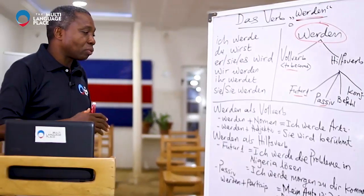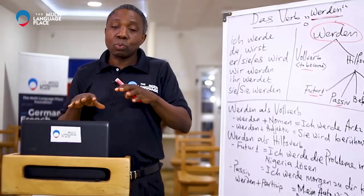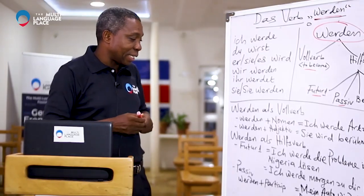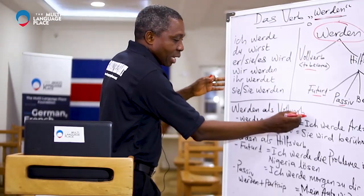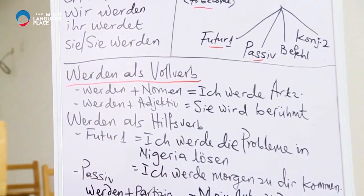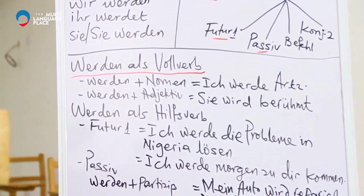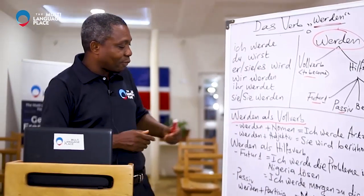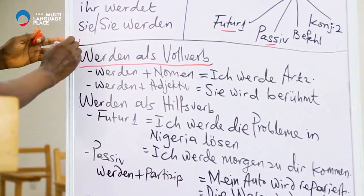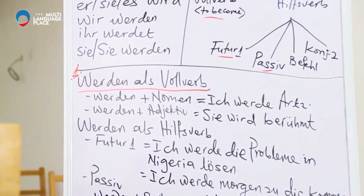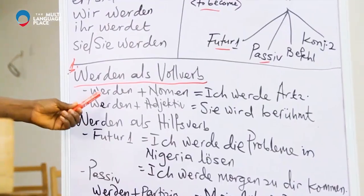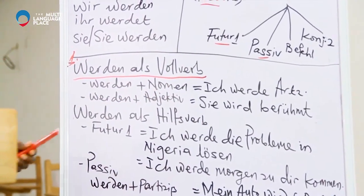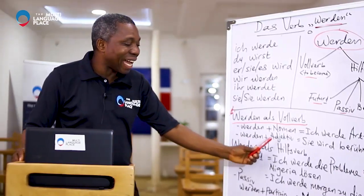Now we want to talk about the different ways this verb can be used. The first is werden as a full verb. Under this, we have a situation where werden is used with nouns, and a second situation where werden is used with adjectives.